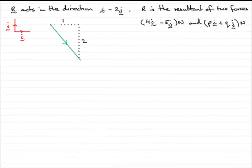Now this part of the question, we're given that R is the resultant of two forces: 4i minus 5j newtons and pi plus qj newtons. And we've got to show that 2p plus q plus 3 equals 0.